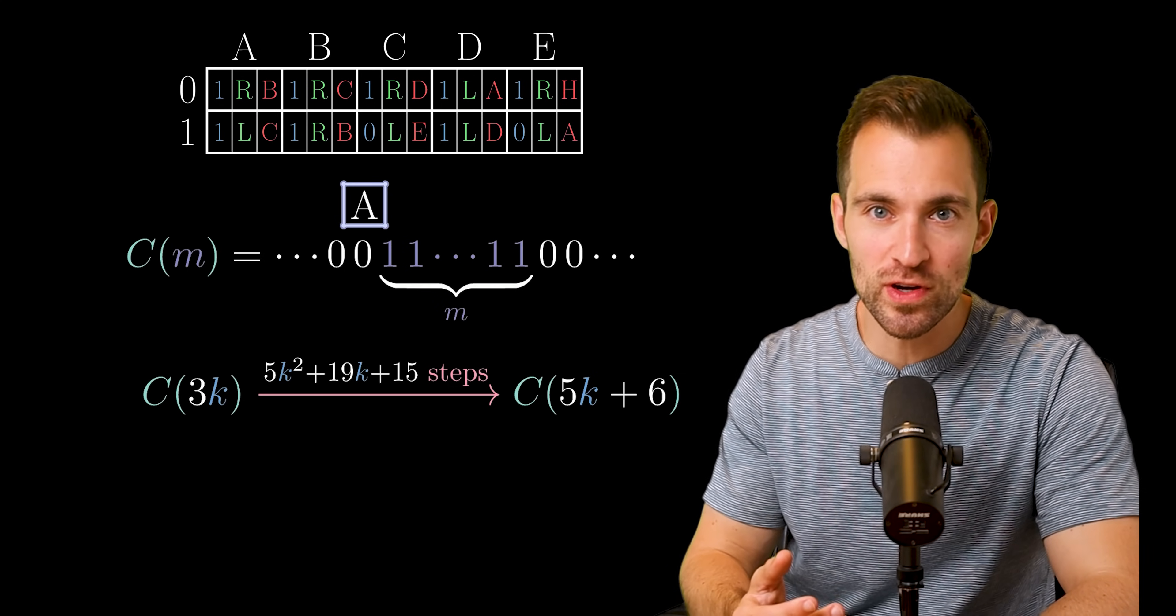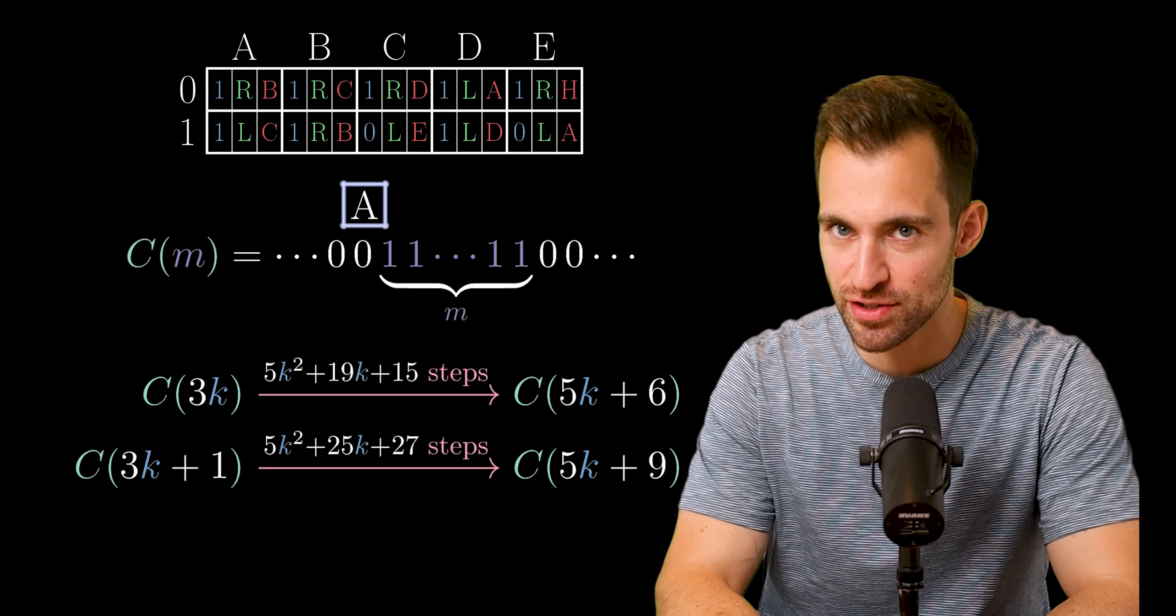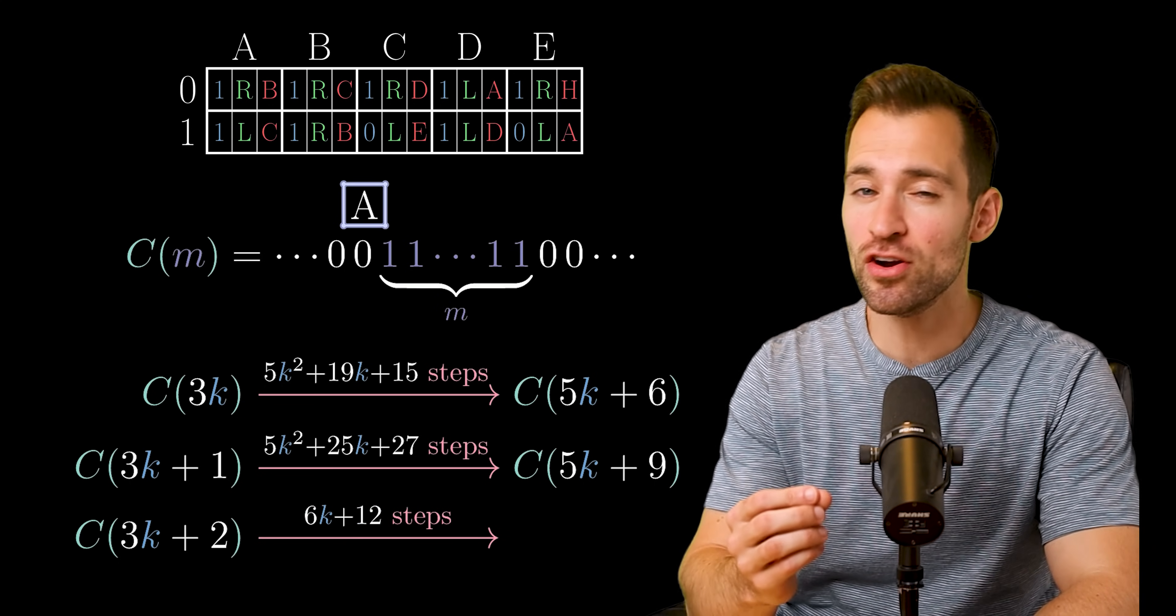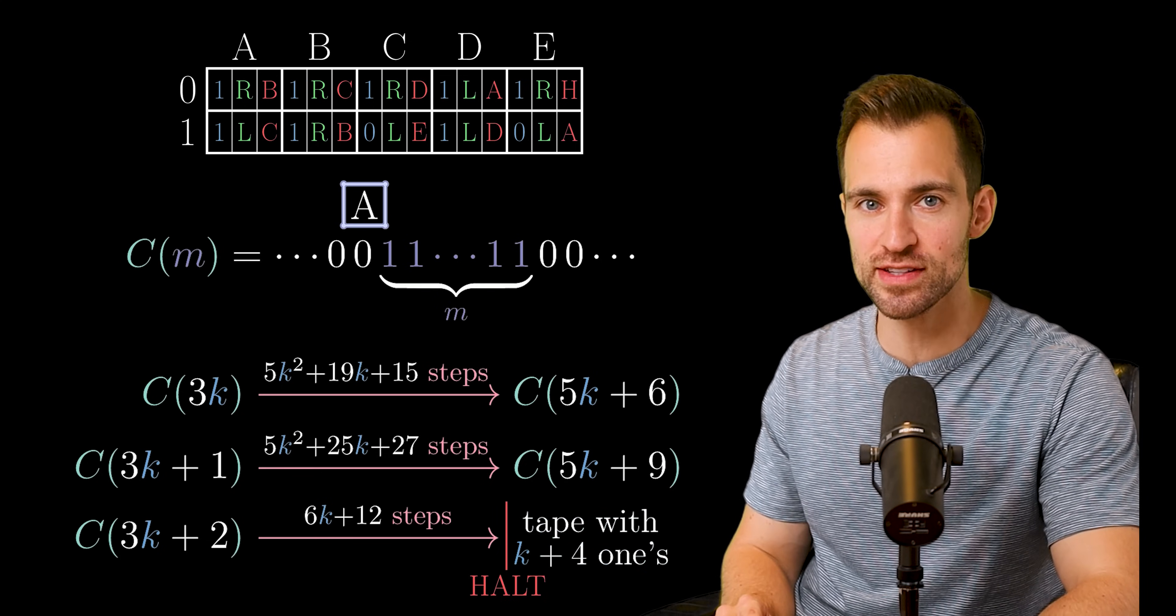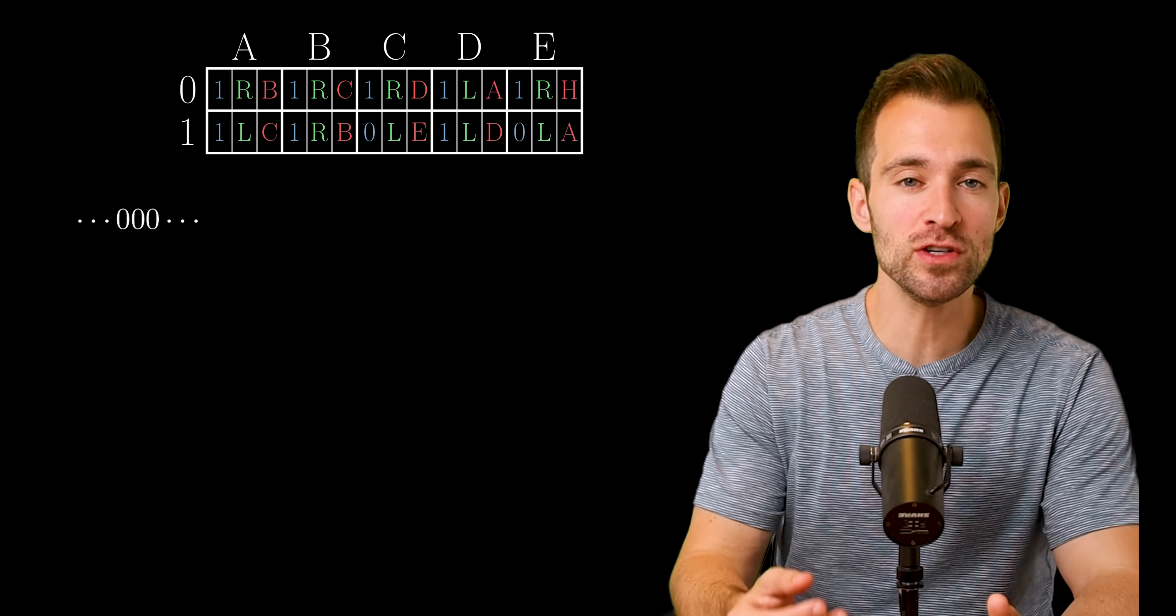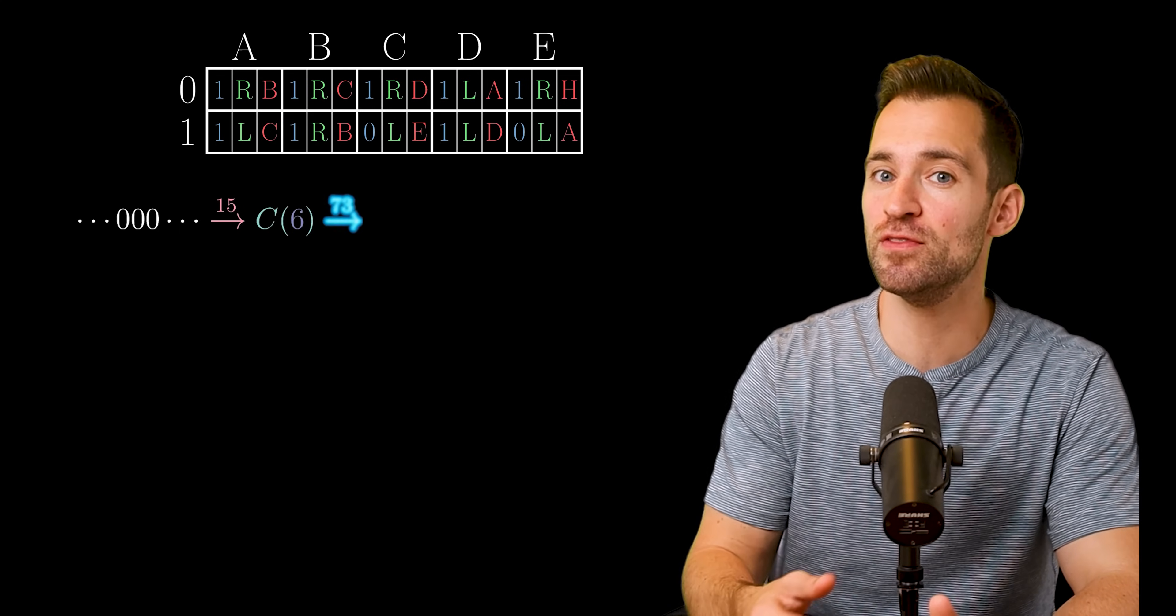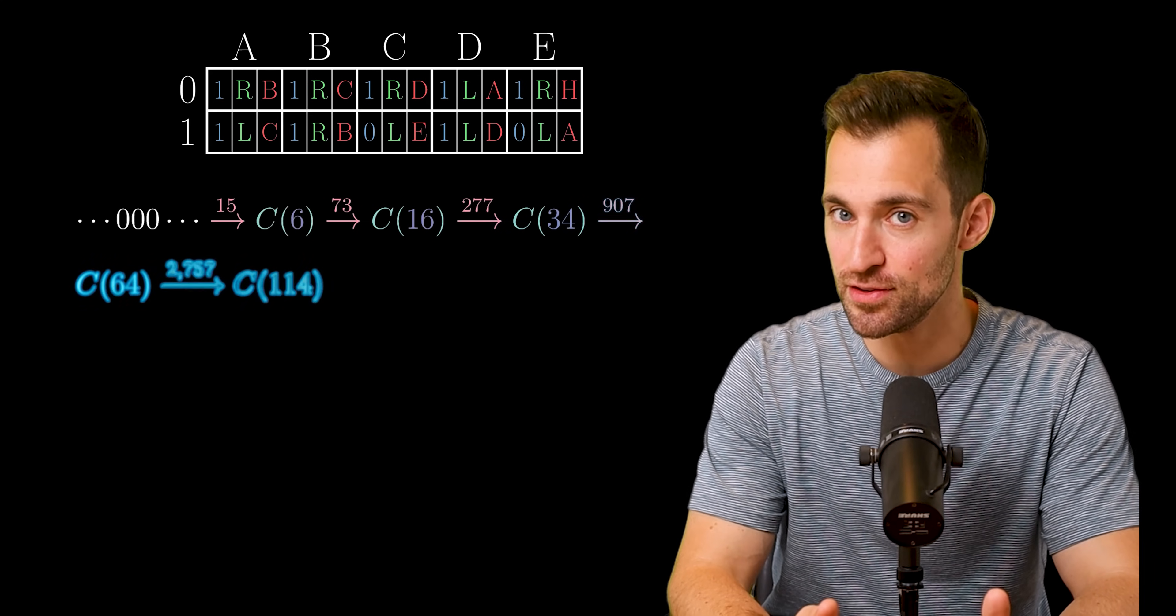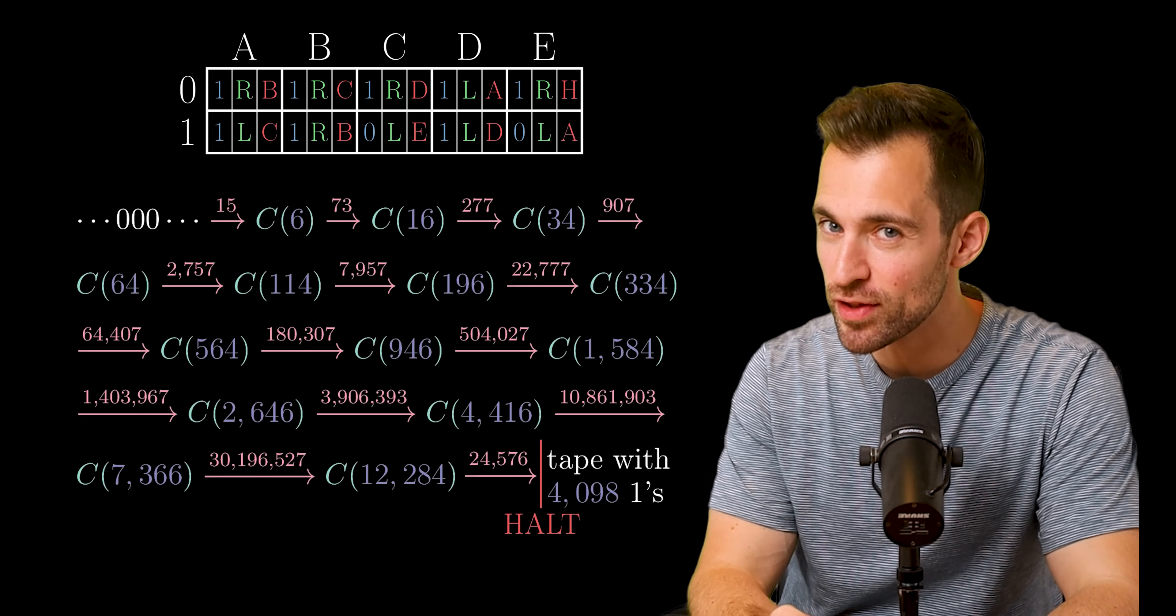Next, if the number of ones has a remainder of one when divided by three, then we perform a similar operation. Finally, if the number of ones has a remainder of two, then we take some steps and halt with a tape that can't be represented with our C notation, but has K plus four ones. Now, let's see this. If we start with an all zeros tape, we first take 15 steps to produce a block of six ones. Next, we take 73 steps to produce a block of 16 ones. And this continues until we halt with 4098 ones.